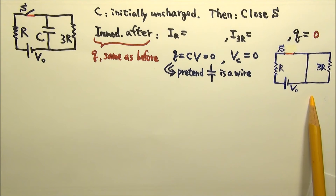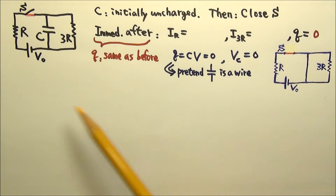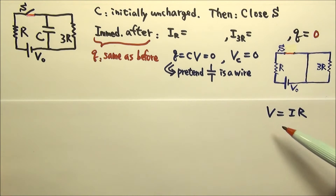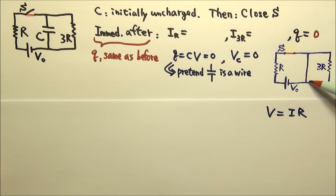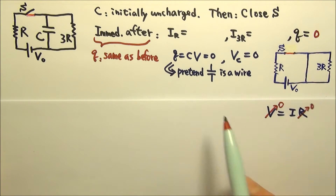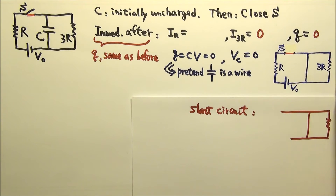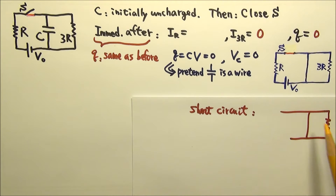And this circuit is like this equivalent one. A wire can allow charging current to flow, and since V = IR, with an ideal wire's resistance being zero, it does not matter how much charging current flows through here — the voltage is zero. In this equivalent circuit, the wire shorts out the 3R, so no current flows through 3R. This is called a short circuit, because when a resistor is in parallel with a zero-resistance wire, current only flows through the wire and not the resistor.